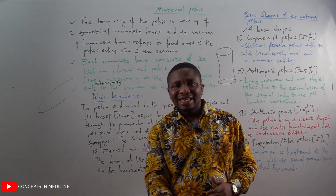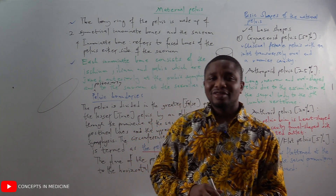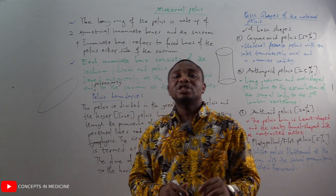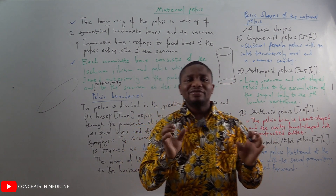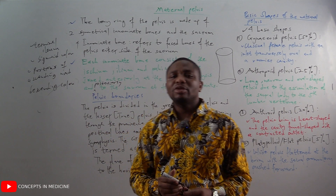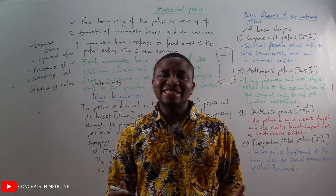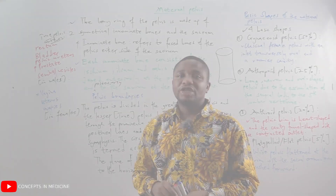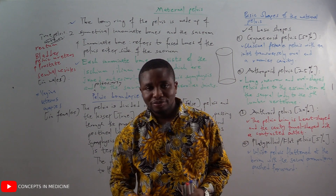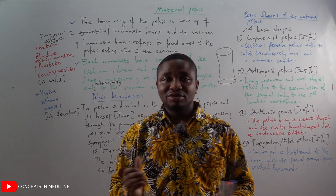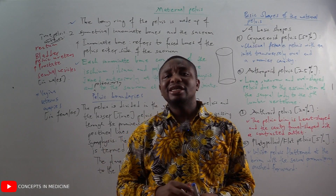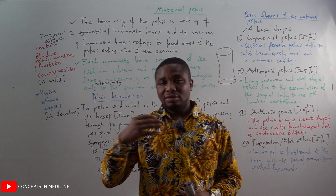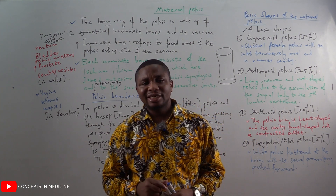The pelvic brim or inlet separates the greater pelvis (false pelvis) above from the lesser pelvis (true pelvis) below. The false pelvis contains the terminal ileum, the sigmoid colon, and portions of the ascending and descending colon. The true pelvis contains the rectum, the bladder, and the pelvic ureters. In males it additionally contains the prostate gland and the seminal vesicles; in females it contains the vagina, the uterus, and the ovaries.